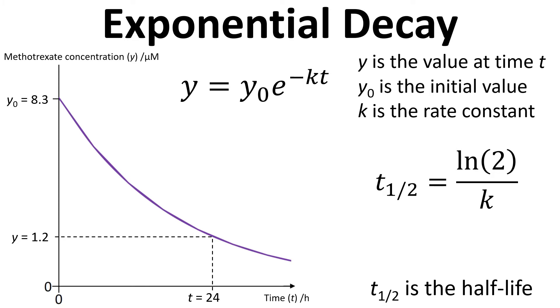So what we need to do first of all is rearrange the equation to get k equals something. So we can start by dividing both sides by y zero and that cancels out on the right hand side. So that leaves us with y divided by y zero equals e to the minus kt.